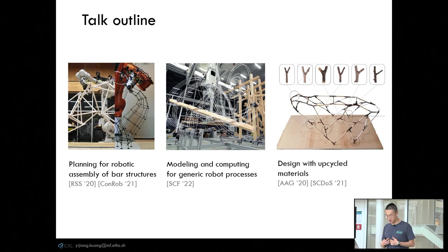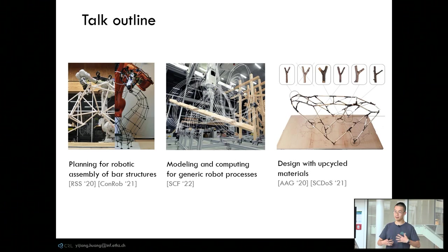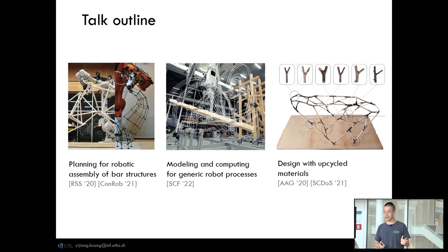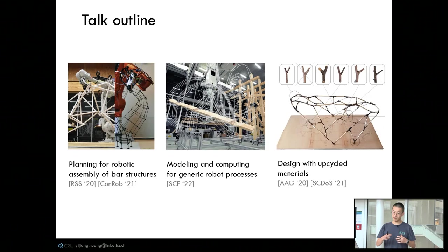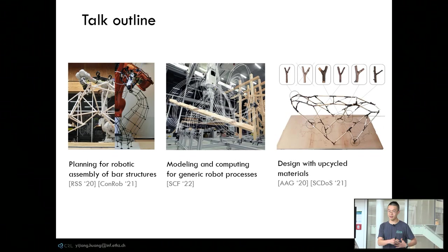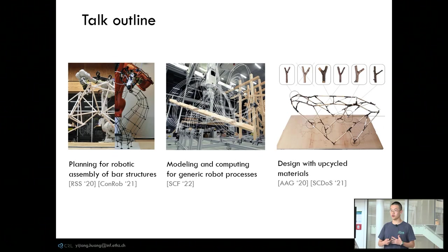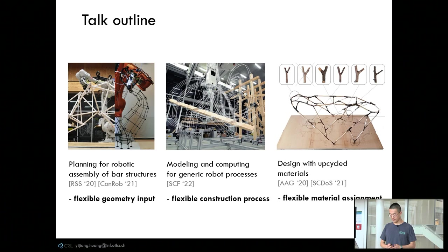From a research perspective, you cannot just go to a job site and test a new construction plan with a human worker. So my current research focuses on automated planning for robot builders in a construction environment, which can be precisely simulated, replayed, and tested. Throughout this talk, I will show three works demonstrating the power of automated planning and the benefits it brings to design and construction. I will start with an intelligent search algorithm that makes robotic assembly more flexible to arbitrary design input, then expand to new robot processes, and end with a resource planning method for upcycled materials.